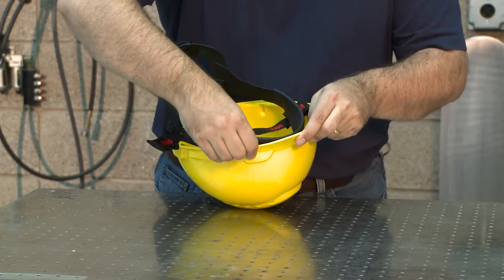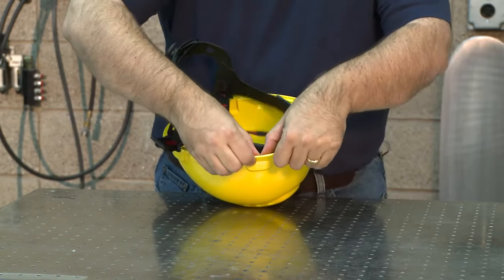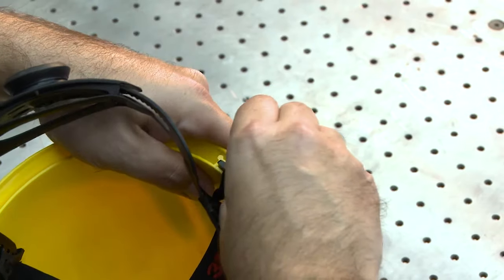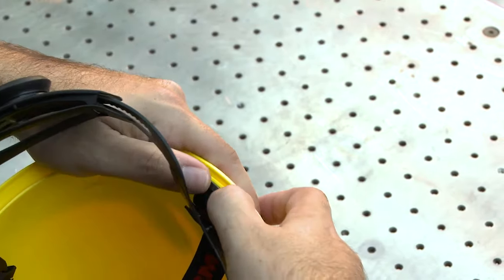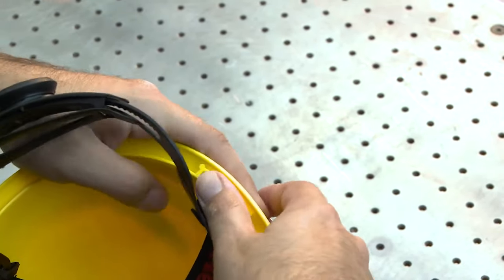Insert one suspension key into the respective key slot. Push the suspension key down into the key slot until it rests below the top of the opening of the key slot.